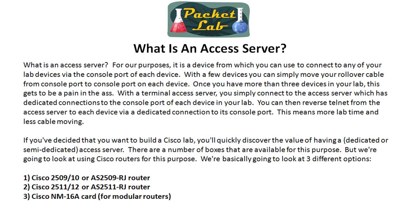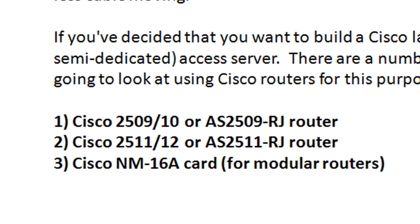Once your Cisco lab has hit the critical mass where you'll get value from having a dedicated or semi-dedicated access server, you're going to start looking around for one. There are a number of boxes out there by various manufacturers available for this purpose. We're going to look at using Cisco equipment specifically, and we're going to look at three different options: the Cisco 2509, 2510, or 2509 RJ router; the Cisco 2511, 2512, or 2511 RJ router; and finally the Cisco NM-16A — NM stands for network module, and A stands for async — which is a card you put into an already existing modular router.